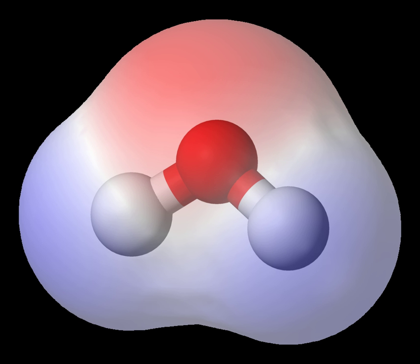Polarity of bonds: Not all atoms attract electrons with the same force. The amount of pull an atom exerts on its electrons is called its electronegativity. Atoms with high electronegativities, such as fluorine, oxygen, and nitrogen, exert a greater pull on electrons than atoms with lower electronegativities such as alkali metals and alkaline earth metals.